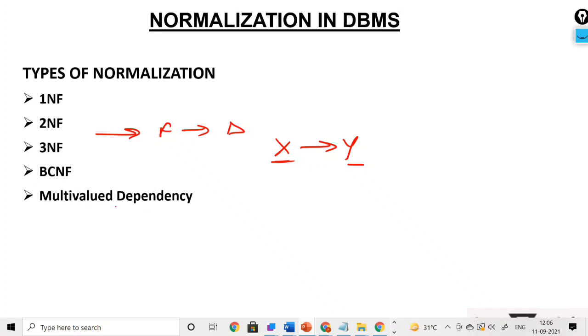What is multivalued dependency? We will understand this also. On the basis of multivalued dependency, we have fourth normal form. We also have joint dependency, on the basis of which we will understand fifth normal form.